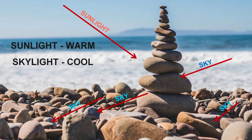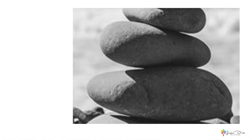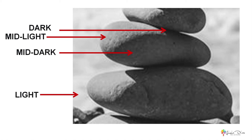In this example, we can create a convincing sense of form on the rocks by using only three values to paint them. They are: dark for the areas where the rocks meet each other, mid-dark for the shadow side of the rocks, and mid-light for the lightest side of them. We would also need another value for the background, which seems to be the lightest in relation to the values seen on the rocks.